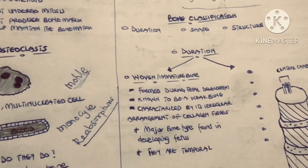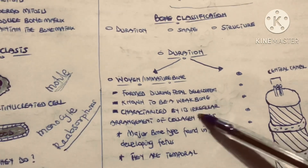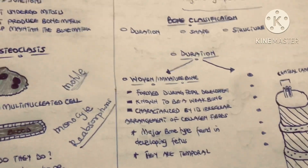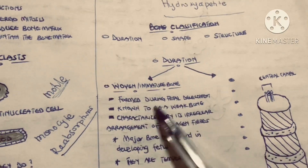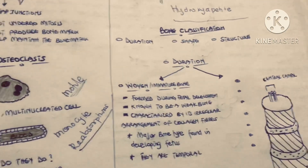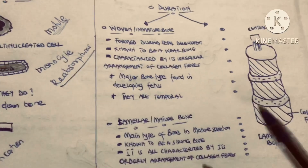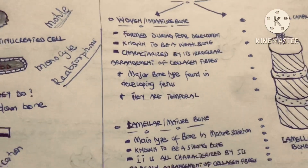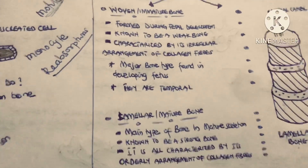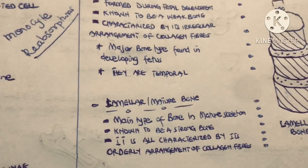The woven bone is very weak because its collagen fibers are irregularly arranged, making it weak. Woven bones are formed during fetal development and are temporary — as you grow, they are replaced by the lamellar bone. The lamellar bone is the second bone to be formed, also called the secondary bone or mature bone. It is very strong because its collagen fibers are regularly arranged, making it compact and strong.